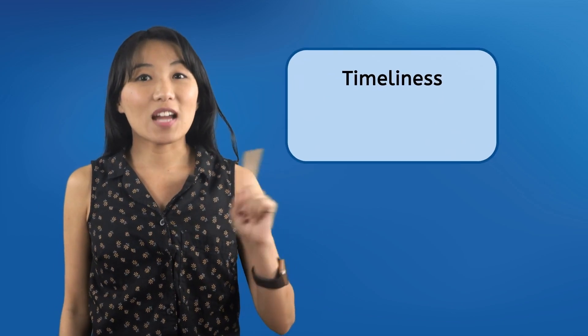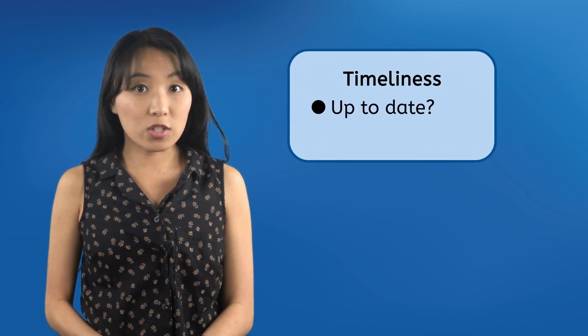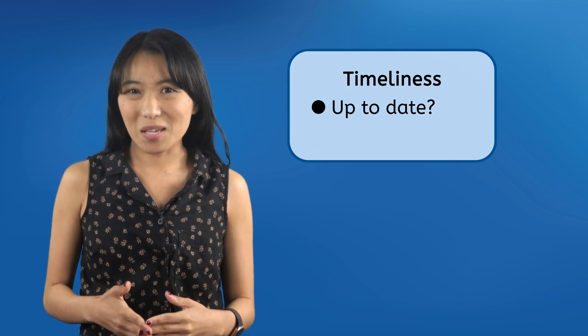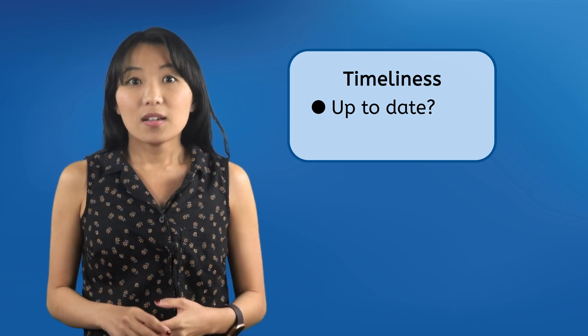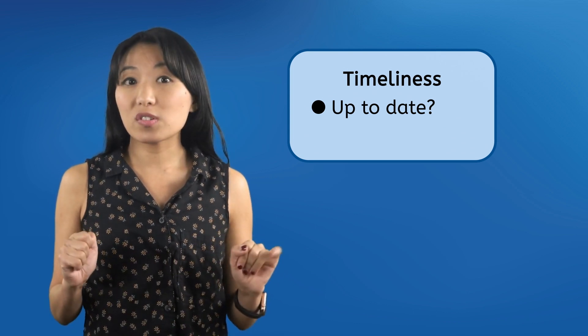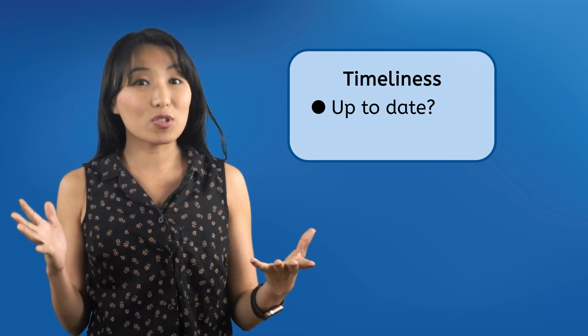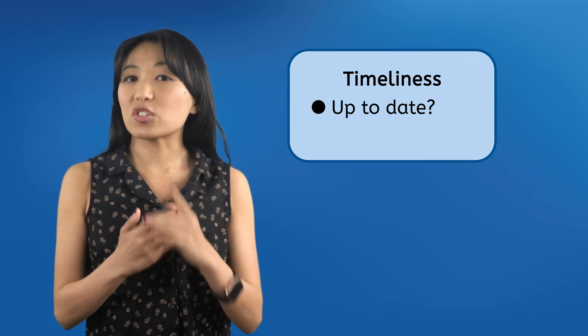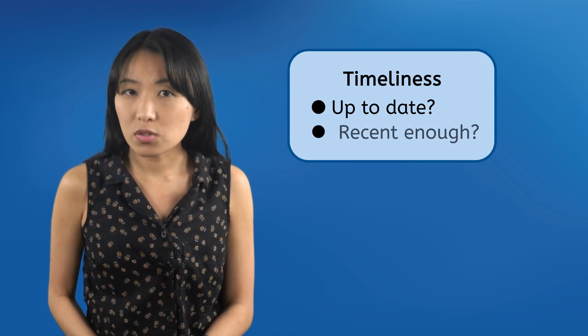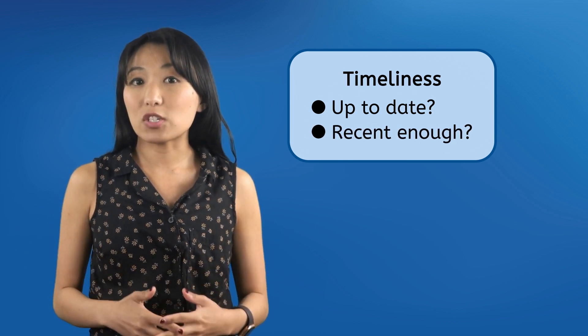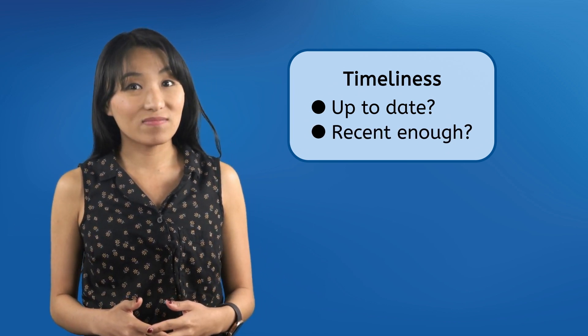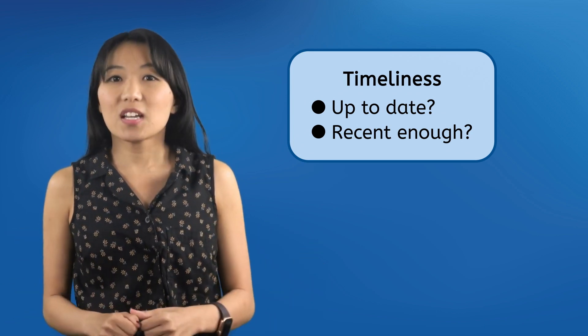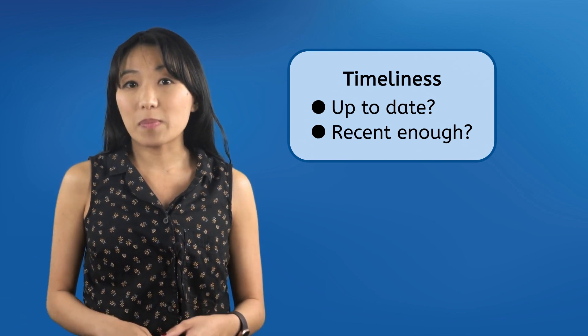The first factor is timeliness. To check for timeliness, first make sure that you are looking at the most up-to-date version of the information. You don't want something that might be outdated. This can be as easy as typing in some keywords into a search engine to find the most recent result. Once you've found the most up-to-date information, ask yourself, is your source recent enough to contain adequate information on the topic you are researching? There isn't a hard and fast rule here because different topics can tolerate older sources better.